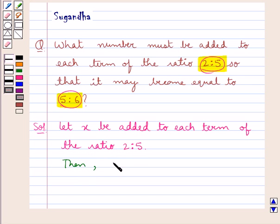Then we get the ratio 2 plus x is to 5 plus x, and this would be equal to the ratio 5 is to 6.